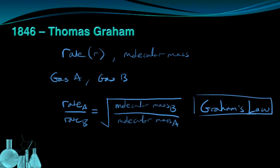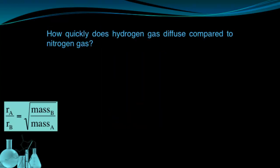Now, Graham's Law has to be used to compare two different gases, gas A and B. So let's see what this looks like with this example. In this case, we're asked how quickly does hydrogen gas diffuse compared to nitrogen gas.